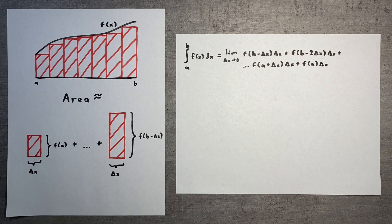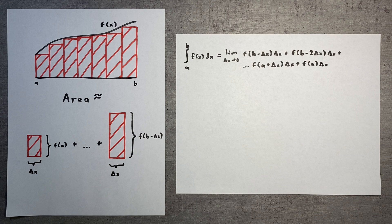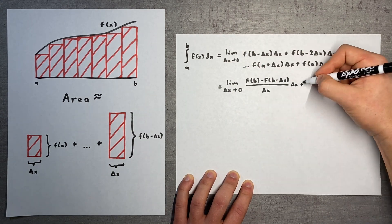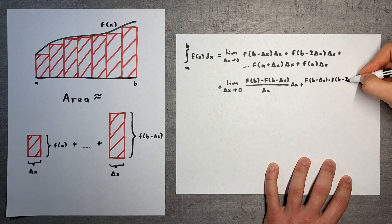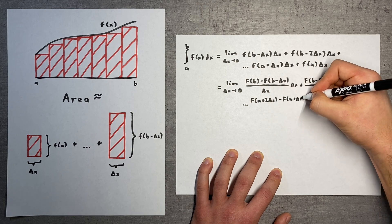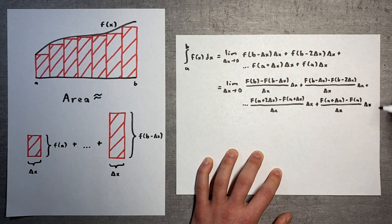By the definition of the derivative, little f of x is equal to the limit as delta x goes to zero of big F of x plus delta x minus F of x, all divided by delta x. We can substitute in these expressions for each little f since we are already taking delta x to zero.